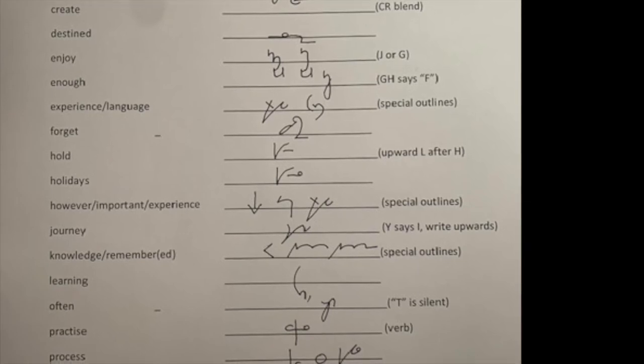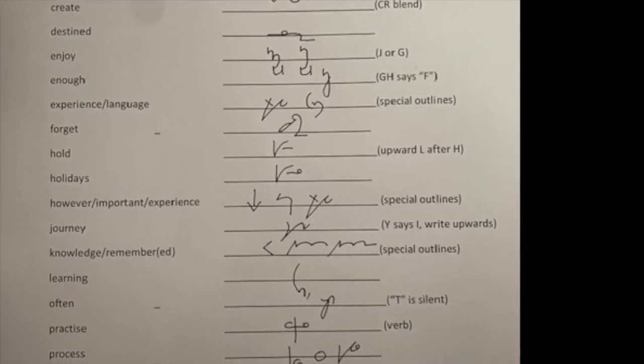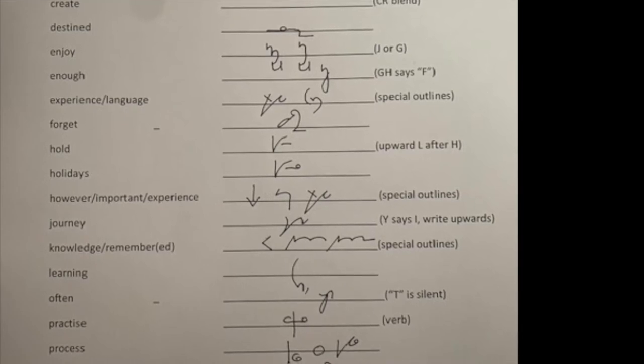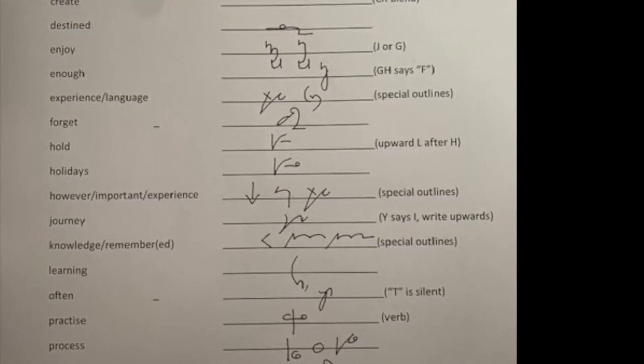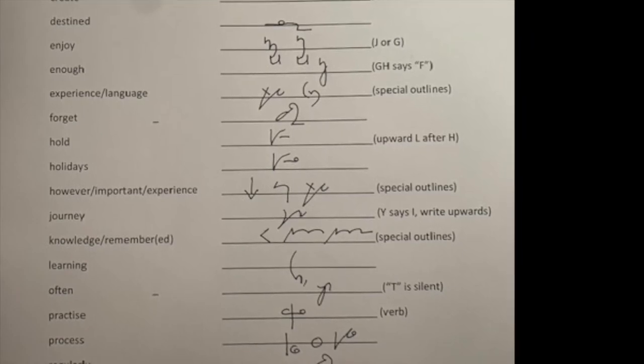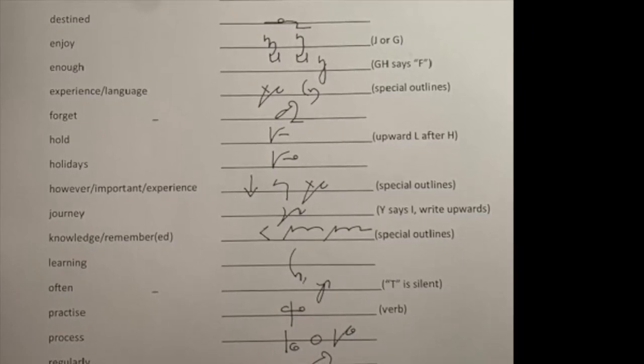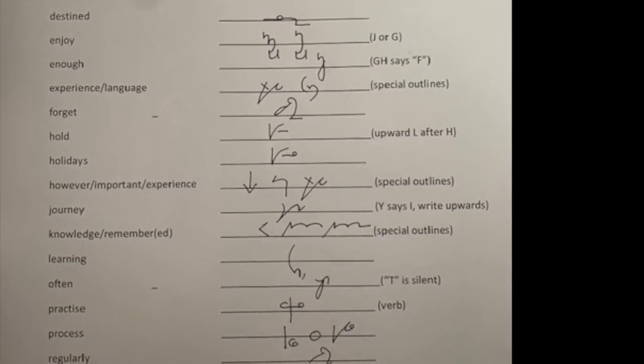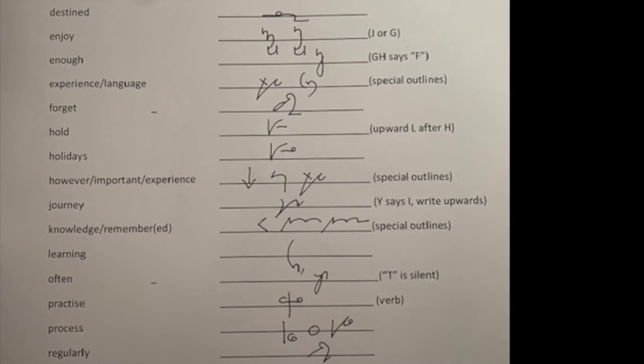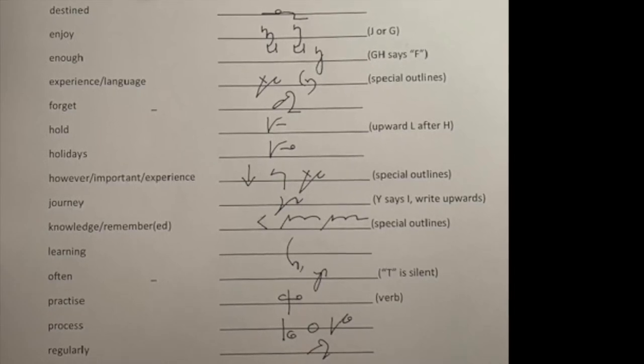Journey next. J or N. The R is blended in with the N and the Y says I, so at a nice sharp angle. If you came down with it, it would look like an extension of the N. So up for a sharp angle. Two more special outlines. K for knowledge. That also says kind, of course. And then remember. Adding a D becomes remembered.